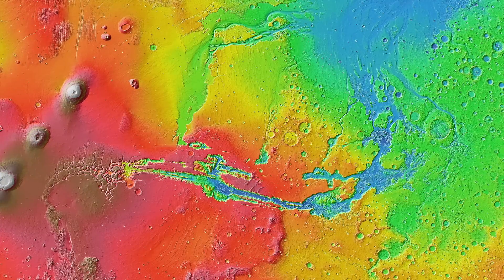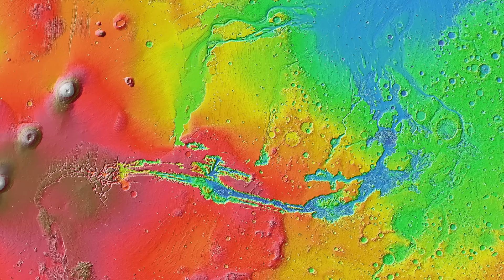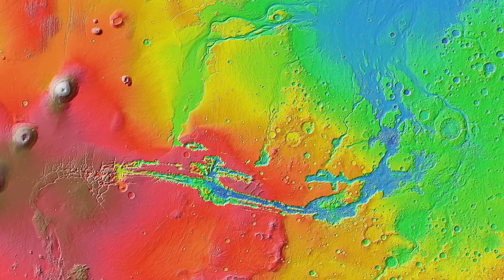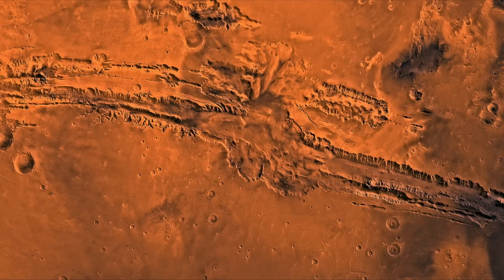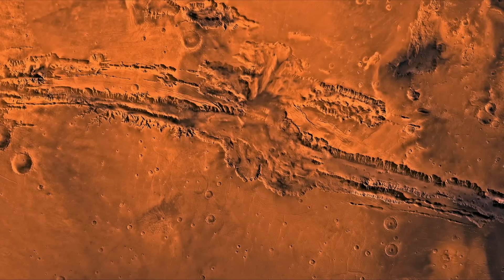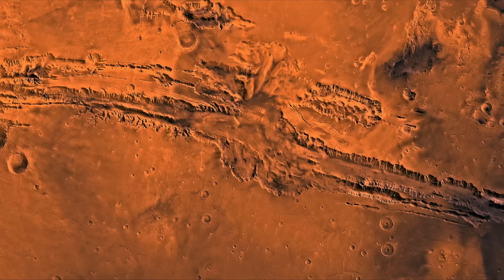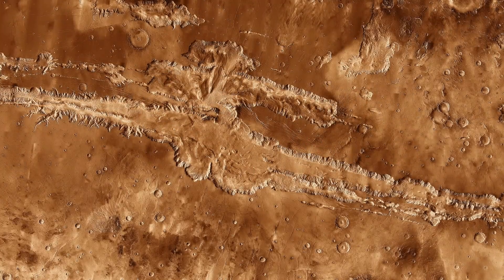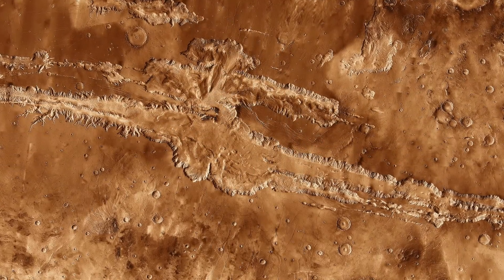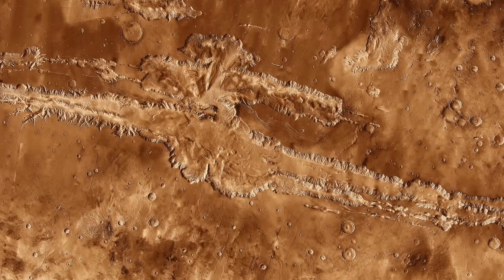Recent data from an instrument known as the ESA Roscosmos ExoMars Trace Gas Orbiter's FRIEND shows abnormal hydrogen levels below Mars' surface. Unlike previous instruments, FRIEND, which stands for Fine Resolution Epithermal Neutron Detector, can detect neutrons up to a meter below the surface of Mars. According to physicist Alexey Malakhov, neutrons are produced when highly energetic particles known as galactic cosmic rays strike Mars.